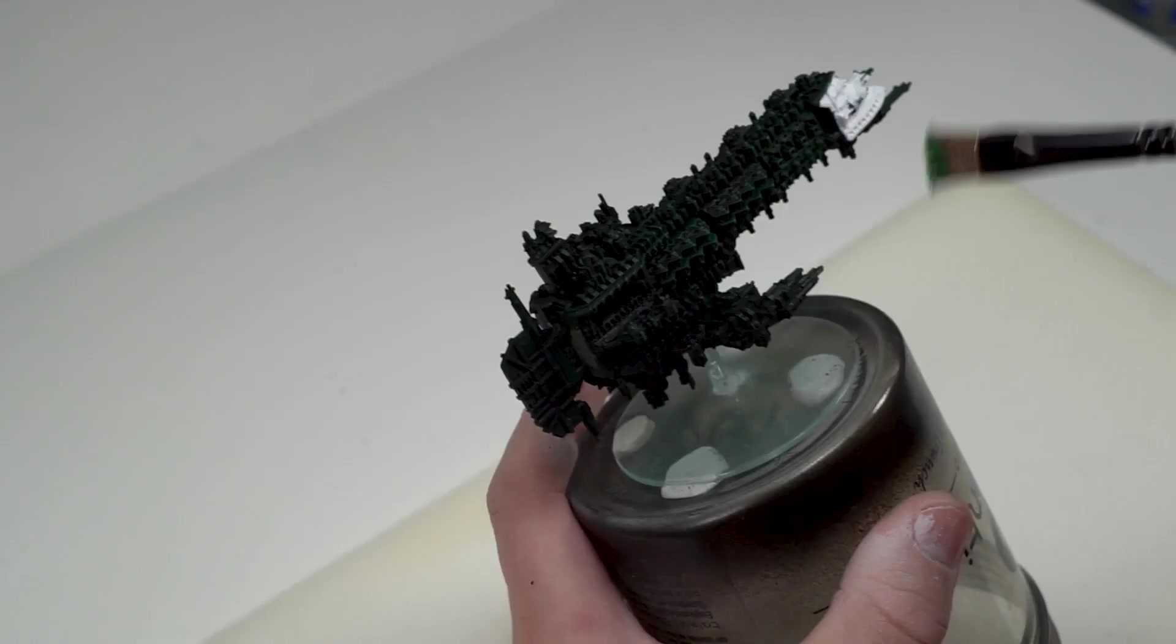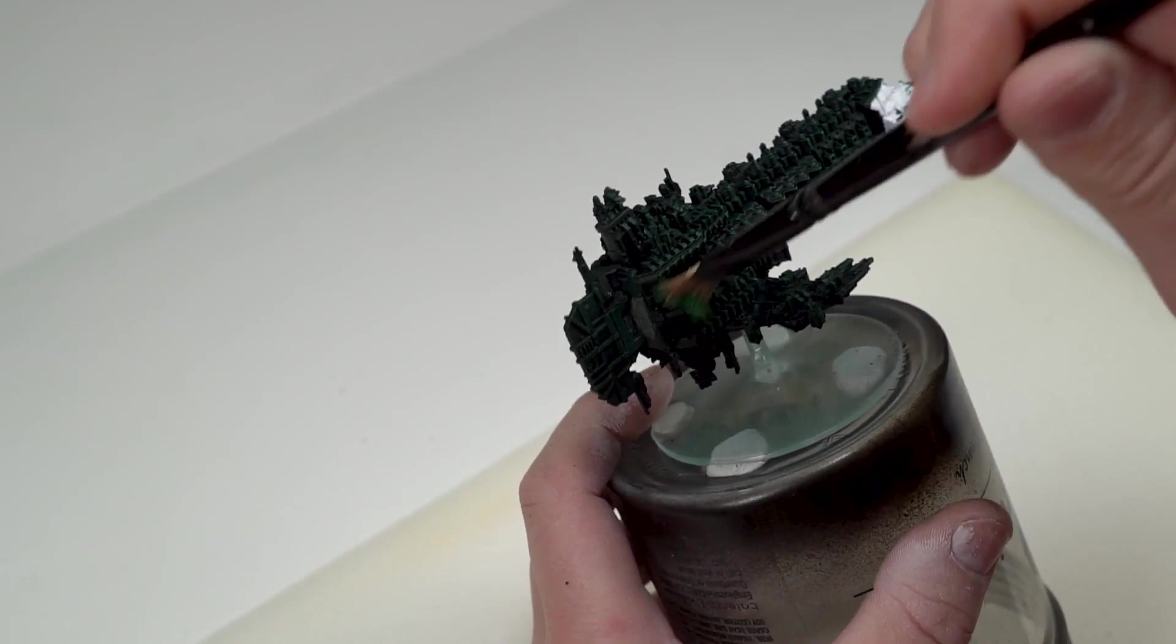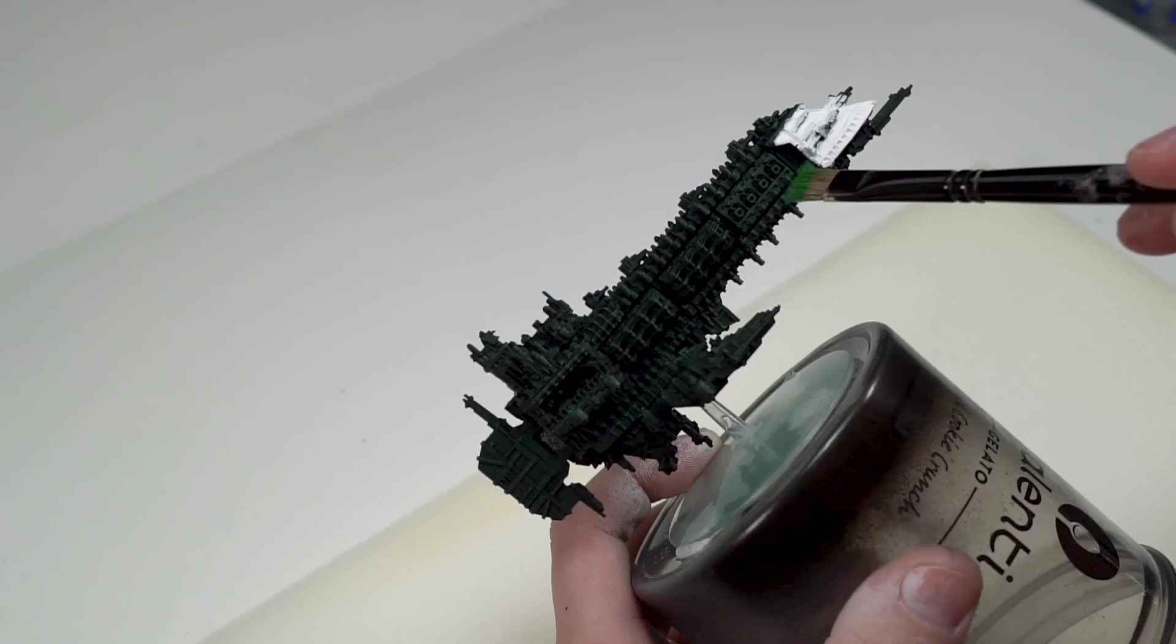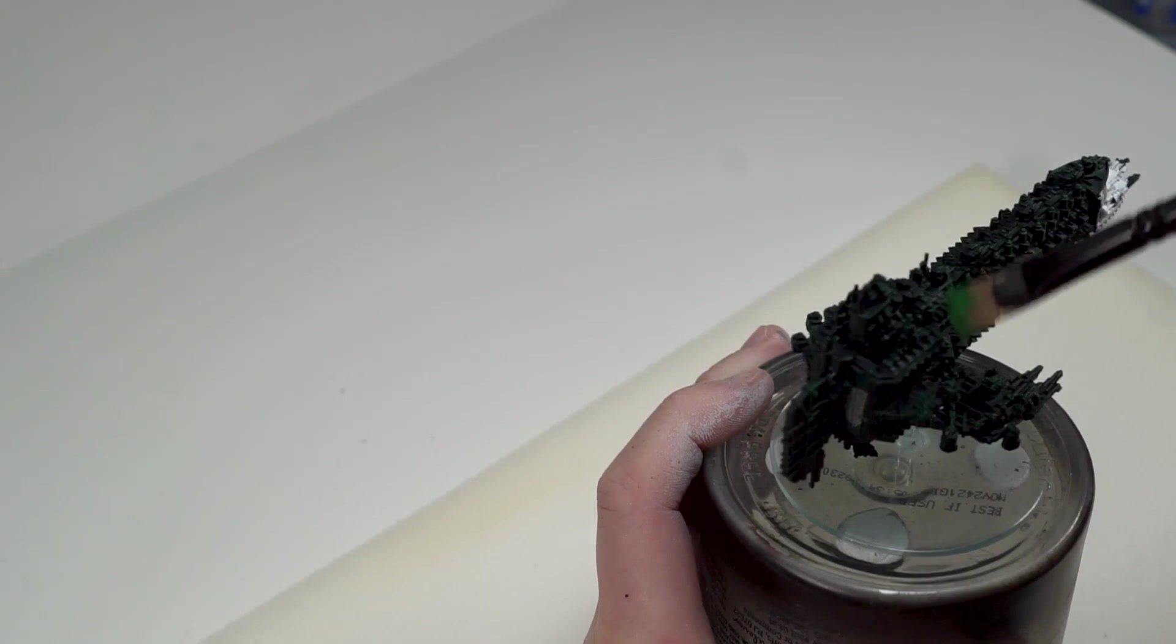Now I'm all about saving money in the hobby, but I do recommend using a brush that is specifically designed for dry brushing so you don't have to fix mistakes. Using a brush that's very flat like this allows the paint to be scraped across the surface of the highest points on the model rather than having any paint going where you don't want it.